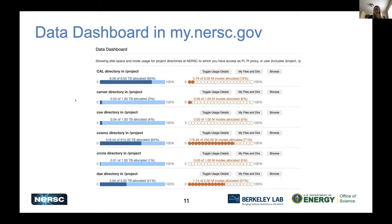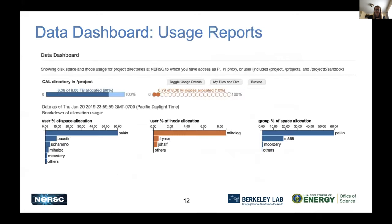When you get close to a quota, you can pull up a plot of who's using what so you can ask folks to clean up. Individual users can also come here and see where their biggest files and directories are, so they know where to start if they need to clean up or archive. Here's an example of what a usage report looks like — you can see a list of users and identify who might want to clean up a bit to give you the most bang for your buck.